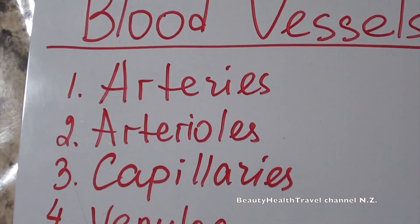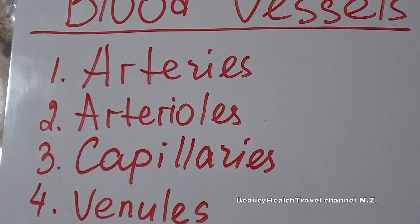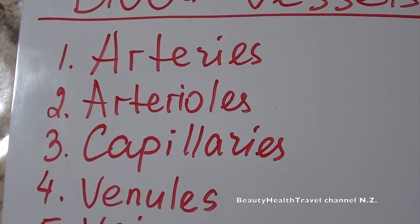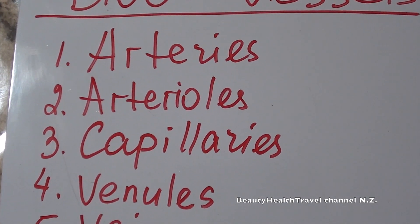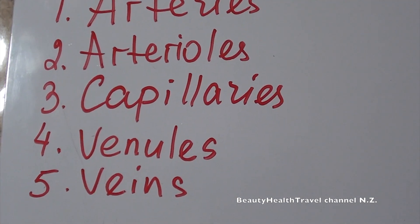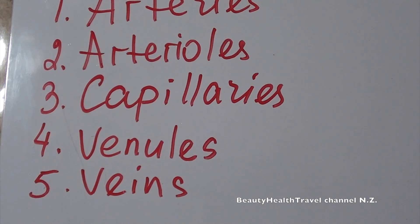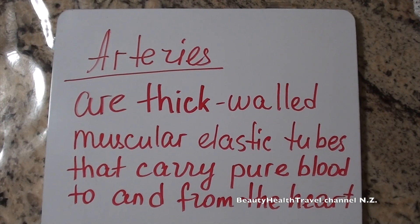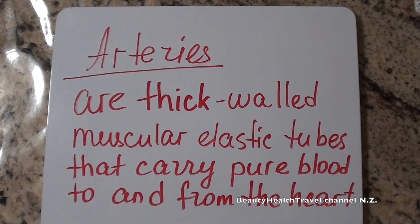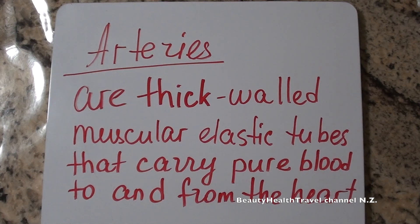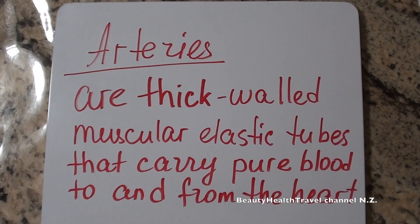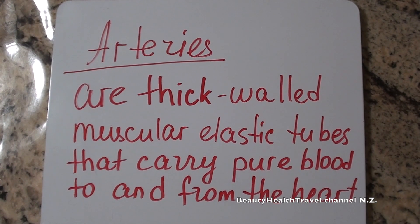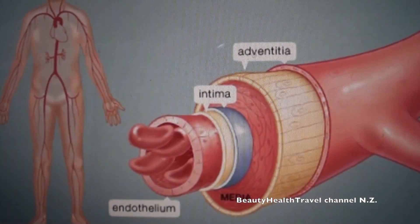Blood vessels include arteries, arterioles, capillaries, venules, and veins. Arteries are thick-walled muscular elastic tubes that carry pure blood to and from the heart.